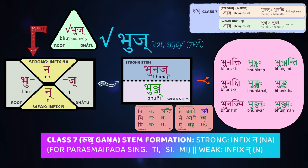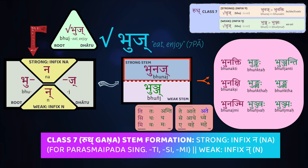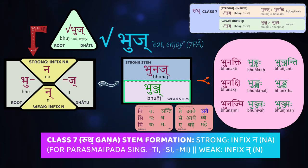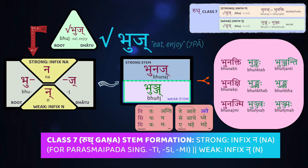For example, in the case of the very common seventh class root bhuj, which means to eat or enjoy, we get bhuñaj as the strong stem with the infixed na syllable. Then we have bhuñj as the weak stem, where you insert the N right after the vowel and it assimilates to a palatal N because of the j. So from the root bhuj, we get the strong stem bhuñaj and the weak stem bhuñj.